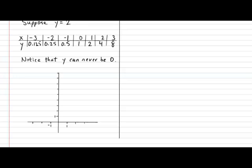So when x is negative 3, y is 0.125. So that's very, very small. Maybe right about there. Next, when x is minus 2, y is 0.25. So that's about a quarter. Maybe right about there. Next, when x is minus 1, y is half. Easy enough. When x is 0, y is 1. When x is 1, y is 2. When x is 2, y is 4. And finally, when x is 3, y is 8.